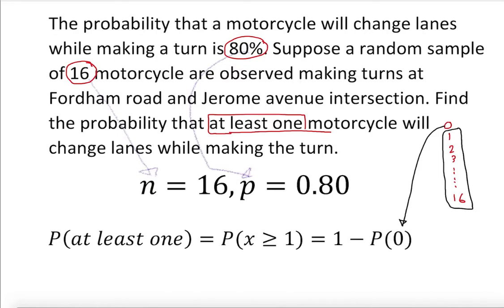At least one means what? One or more. You go all the way up. That's what at least one means: one or more.